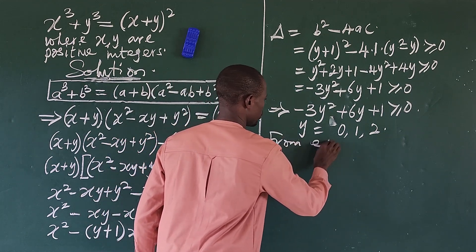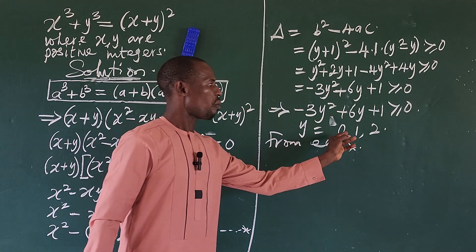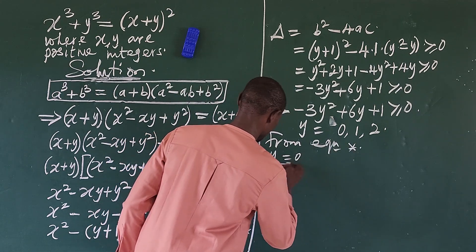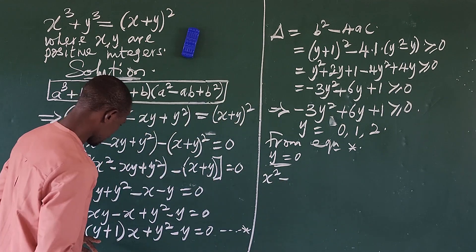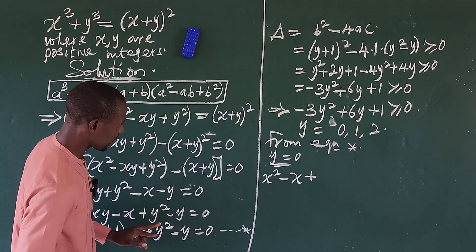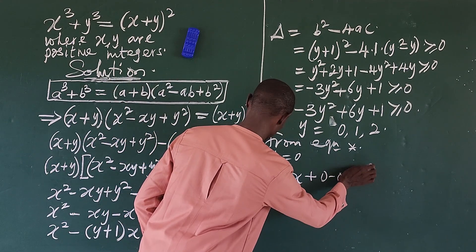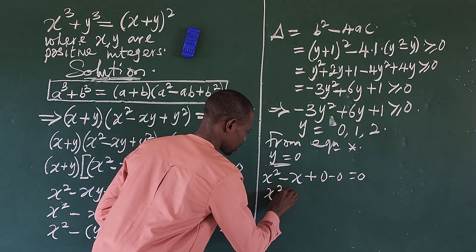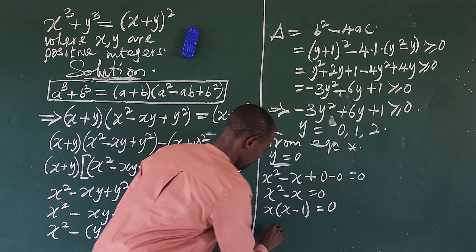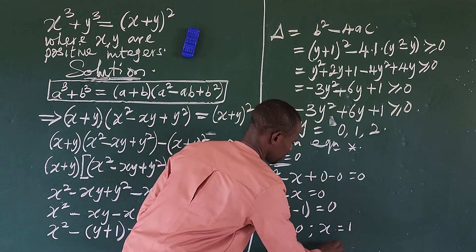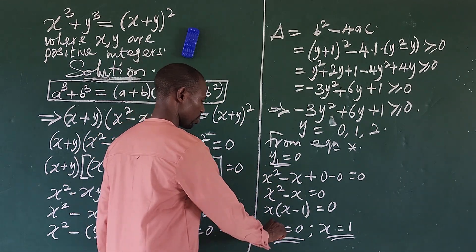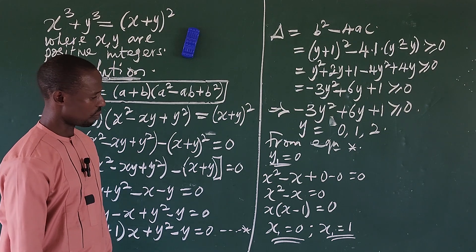From equation star, when y equals 0, we get x squared minus x equals 0. Factoring gives x times bracket x minus 1 close bracket equals 0, so x equals 0 or x equals 1. When y equals 1, substituting into equation star gives x squared minus 2x equals 0. Factoring gives x times bracket x minus 2 close bracket equals 0, so x equals 0 or x equals 2.